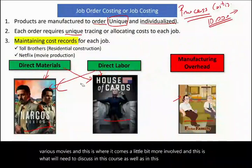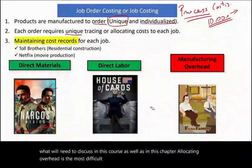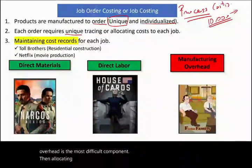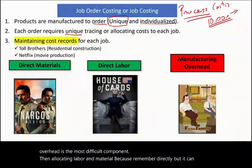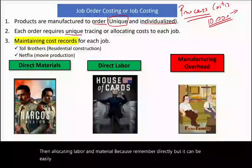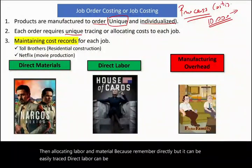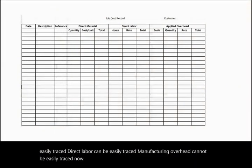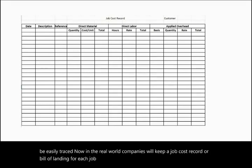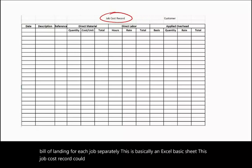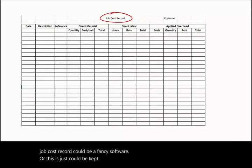Allocating overhead is the most difficult component compared to allocating labor and material, because direct labor and direct material can be easily traced, while manufacturing overhead cannot. In the real world, companies keep a job cost record or bill of lading for each job separately. This could be a fancy software system or simply an Excel sheet.